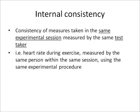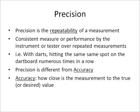Stability involves different days, while internal consistency must be within the same testing session. Precision is the repeatability of a measurement — consistent measure or performance by the instrument or tester over repeated measurements. An example is darts hitting the same spot on the dartboard numerous times in a row. Even if you weren't aiming at that point, hitting the same spot repeatedly means you are precise. Precision is different from accuracy — accuracy is how close the measurement is to the true or desired value.